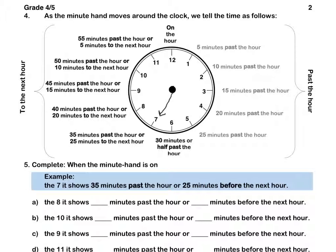If it is on the 10, it means 50 minutes past the hour or 10 minutes to the next hour. If it is on the 11, it means 55 minutes past the hour or 5 minutes to the next hour. If it is on the 12, it means that it is on the following hour.